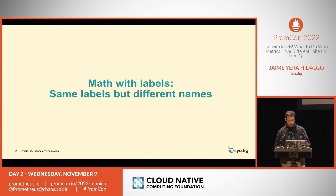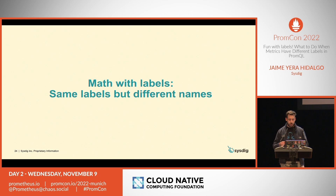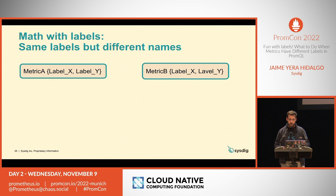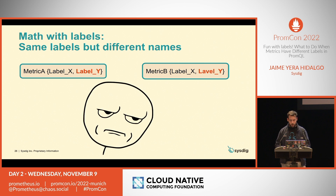For the third use case: usually most of the exporters are created by several people and they may not be communicating with each other. We have a standard for the metric name, but there is no standard for labels. Maybe one person calls a label one way and another person calls it another way, but the information inside that label is the same. So maybe we think we can match those metrics because they have the same label value, but sometimes the naming difference can cause our operation to fail.